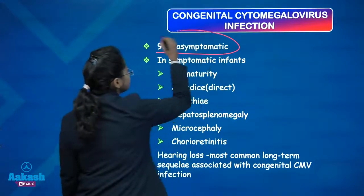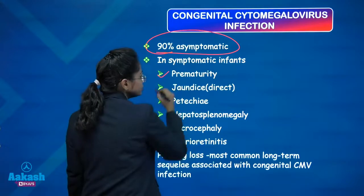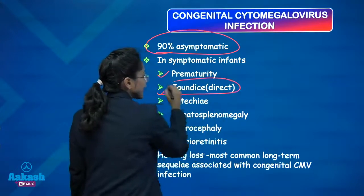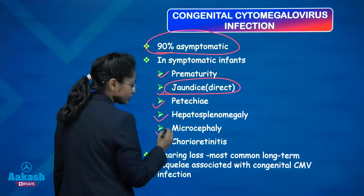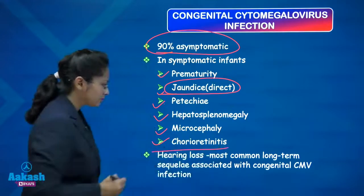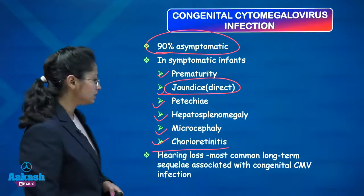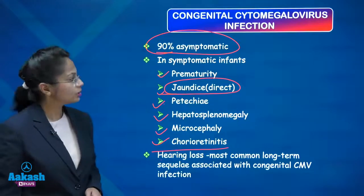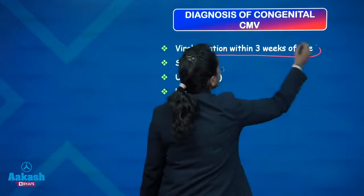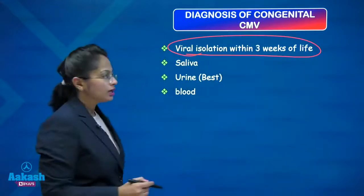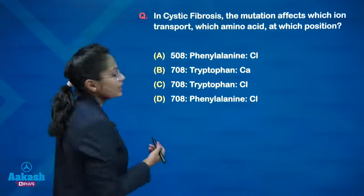90 percent of babies are asymptomatic. Symptoms include prematurity, conjugated hyperbilirubinemia, petechiae, hepatosplenomegaly, microcephaly, and chorioretinitis. Hearing loss is the most common long-term sequelae seen in congenital CMV infection. For diagnosis, within three weeks of life, viral isolation is to be done and the best sample is urine. For treatment, you have ganciclovir.